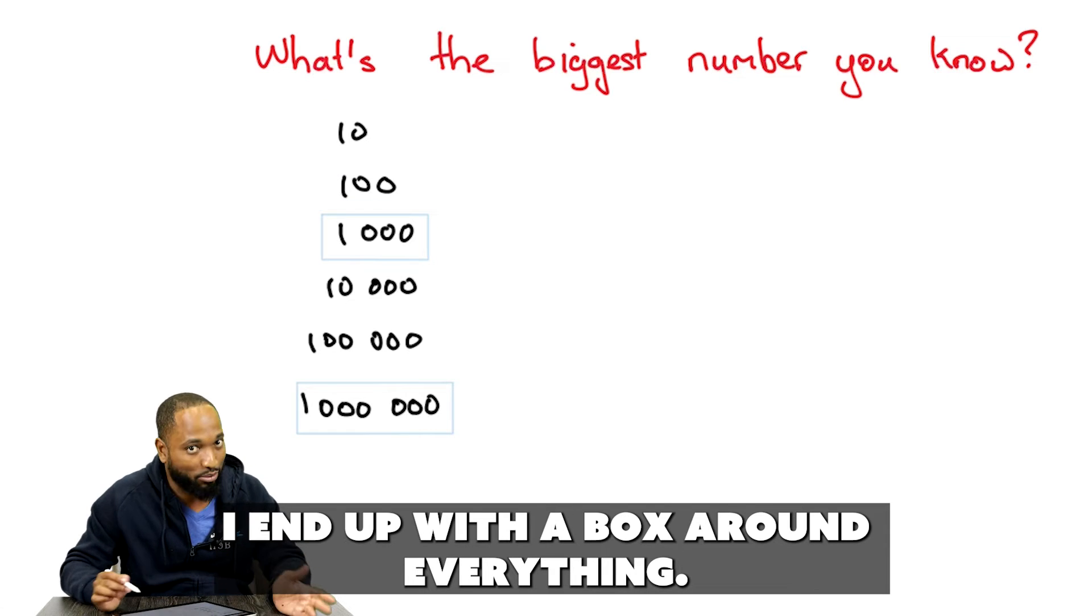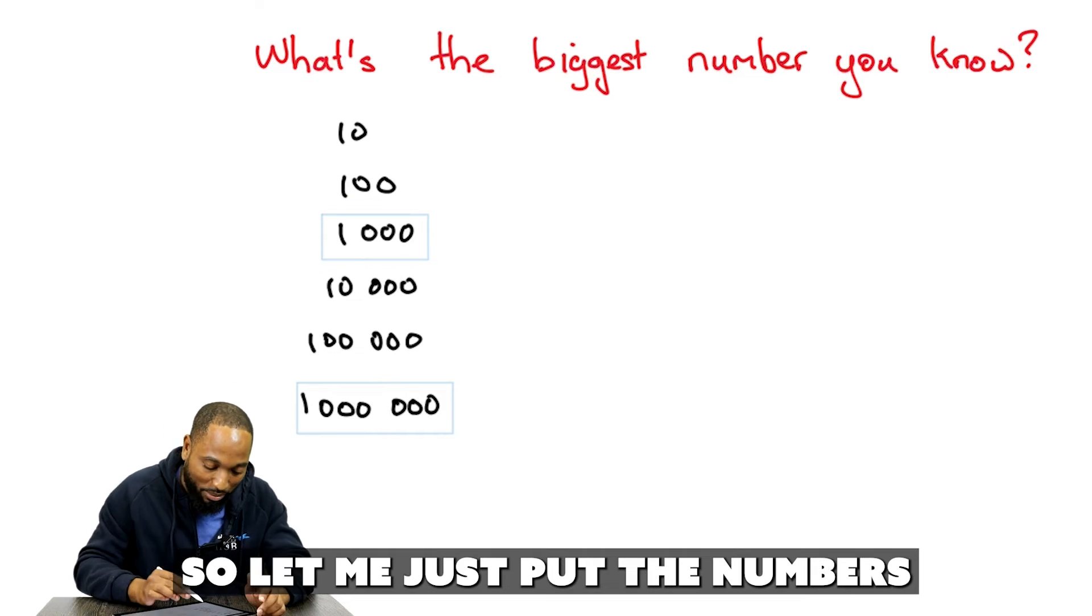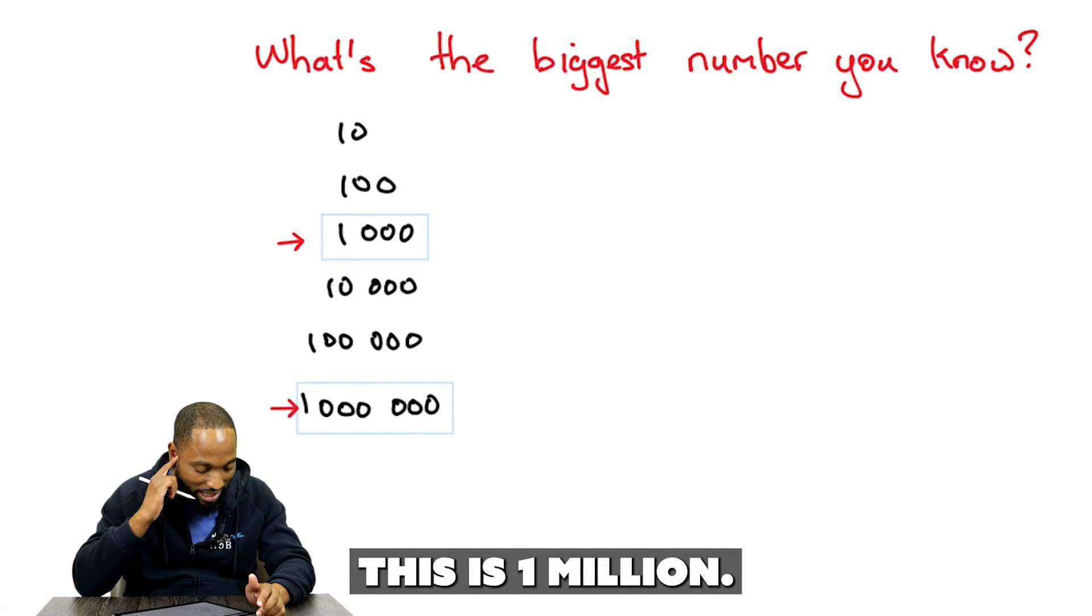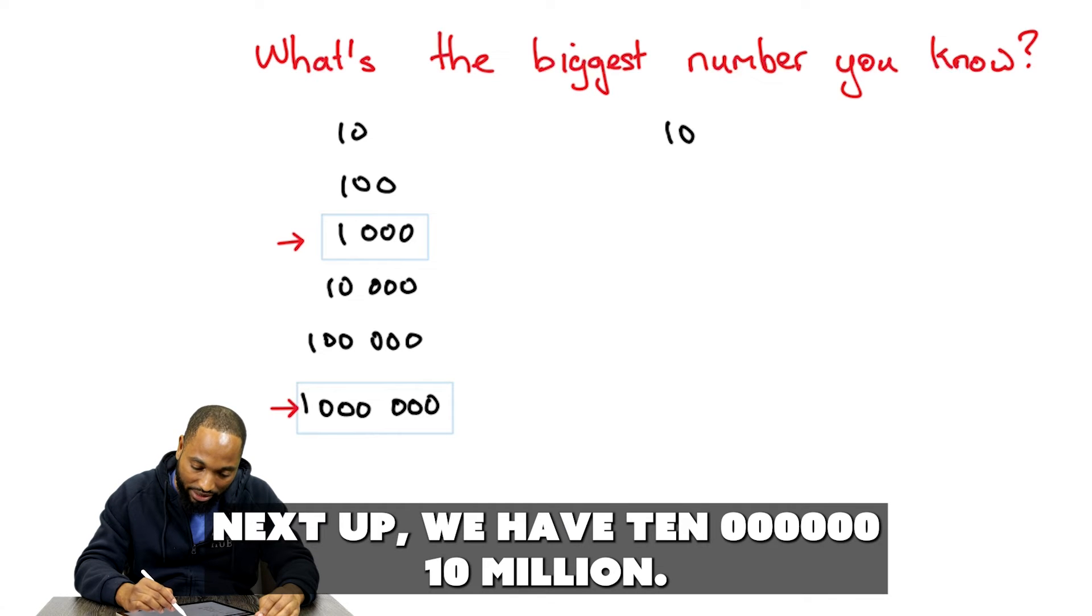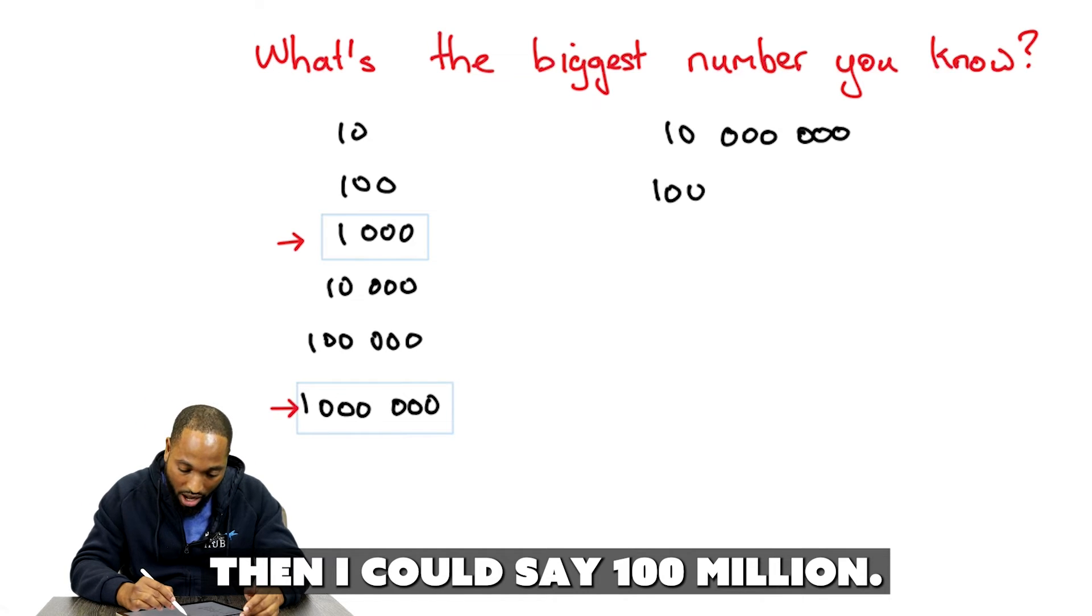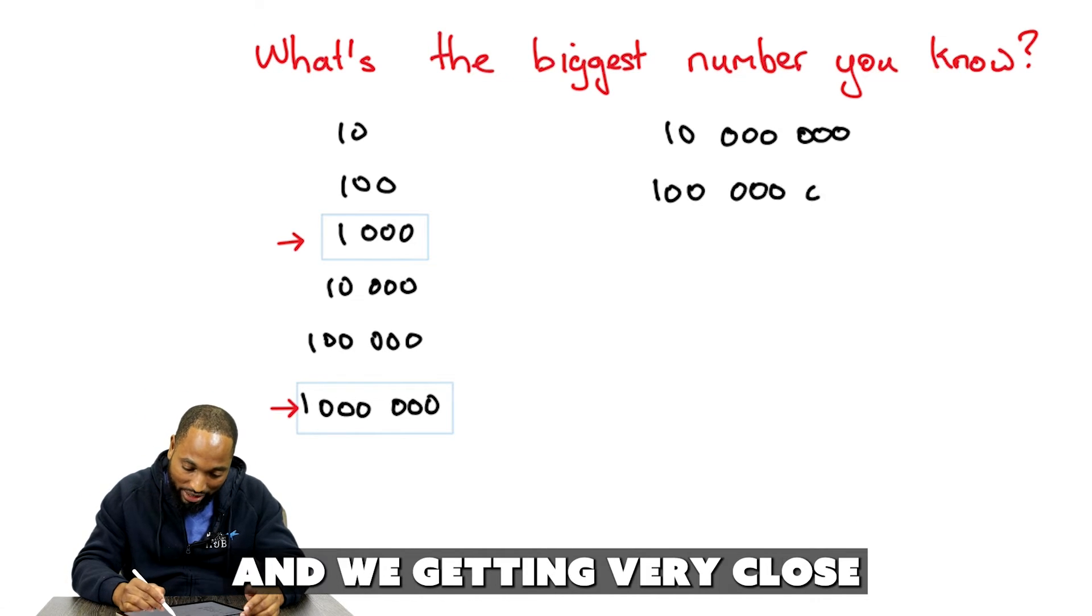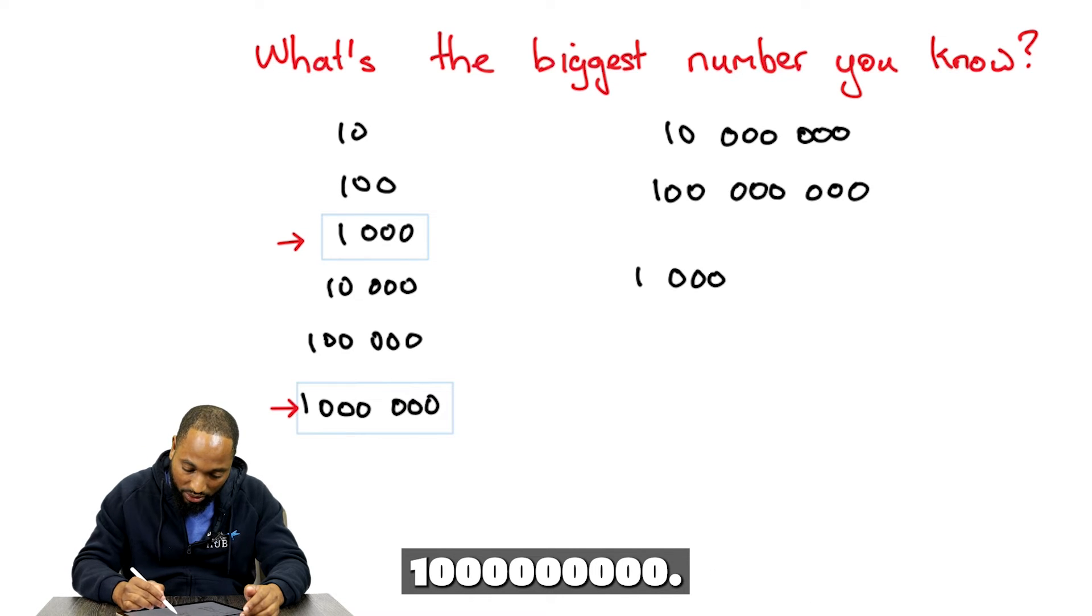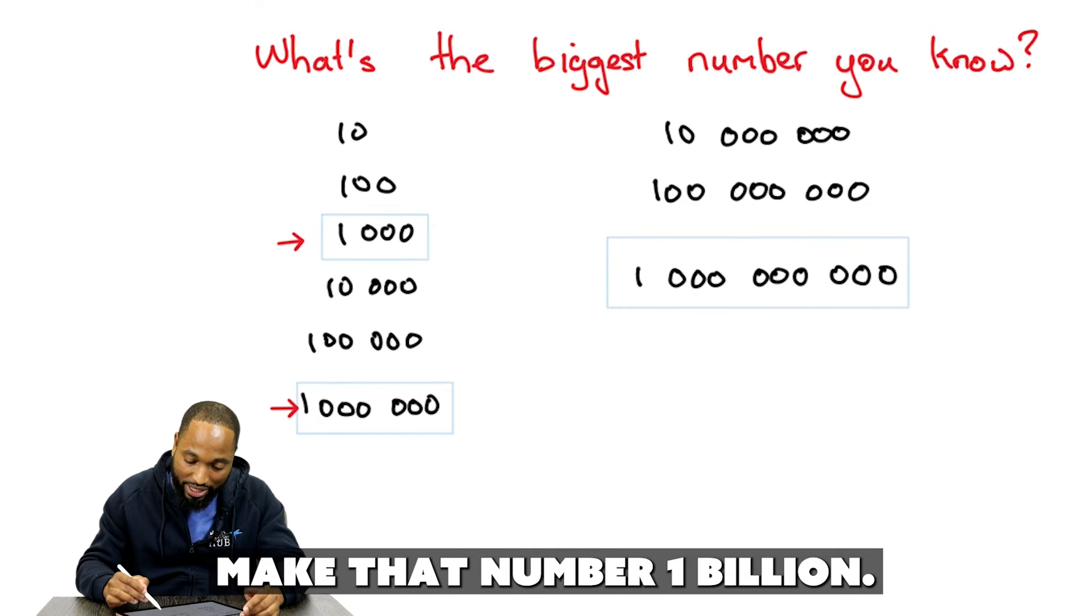So, if I put a box around everything, let me just put the numbers to stand out. So, this is 1,000. This is 1 million. What's next? Next up, we have 10,000,000. 10 million. Then, I could say 100 million. And we're getting very close to the final number for today. 1,000,000,000. 9 zeros. Make that number 1 billion.